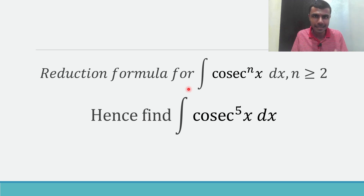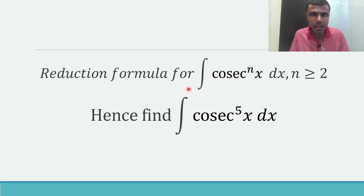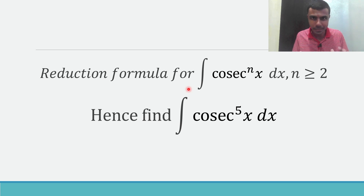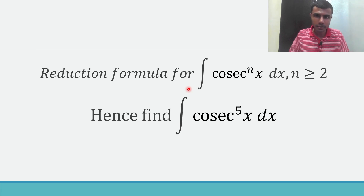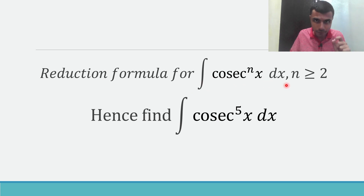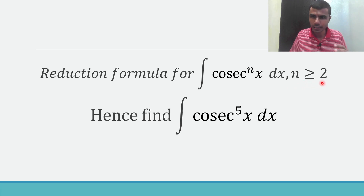Hello learners, this is Akash. I completed my B.Tech from NIT Raipur in the year 2020. Currently I'm a mathematics teacher. Now let us see how to solve this given question. Here we need to find out the reduction formula for cosecant power n of x dx, where n is a positive integer greater than or equal to 2.